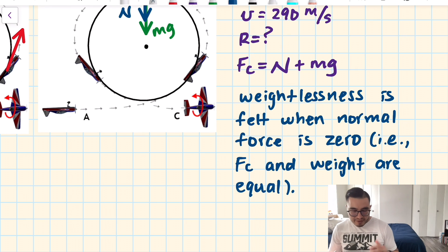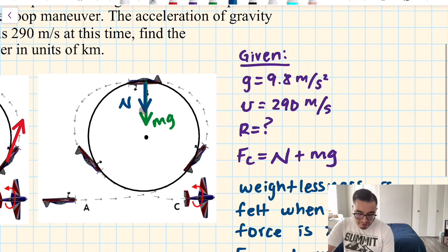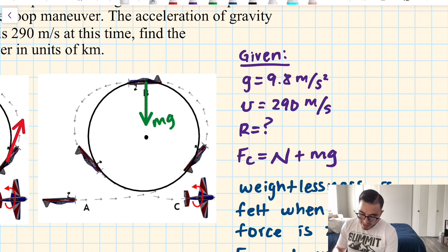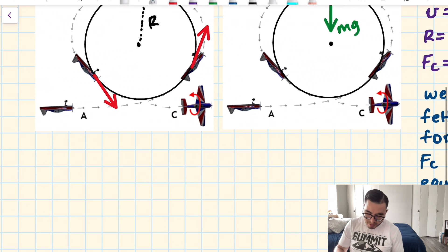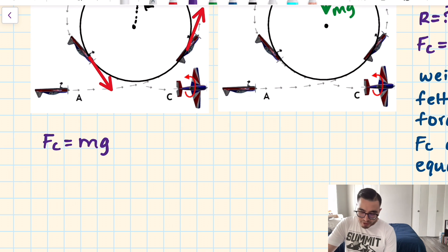So, weightlessness, for this case, or roller coaster, is felt when normal force is zero. That is, centripetal force and weight are equal. That means, at this point, for the free body diagram, we have to get rid of the normal force because she feels weightless. And our equation will simplify rather nicely.